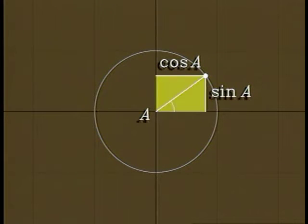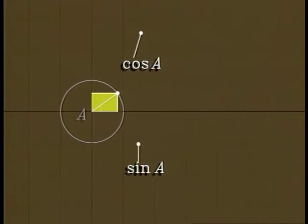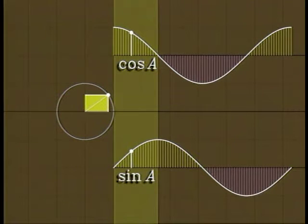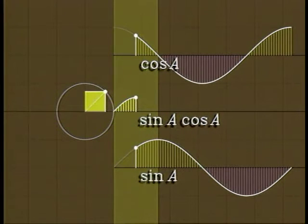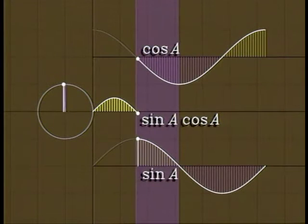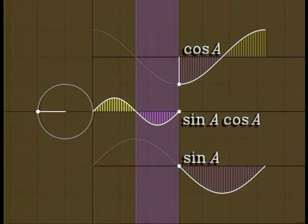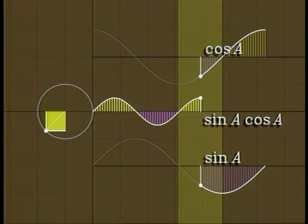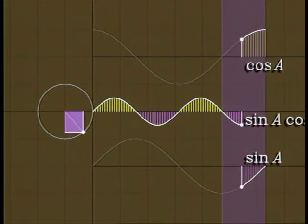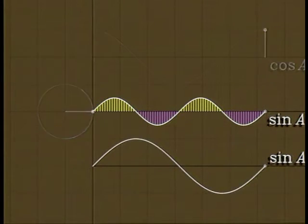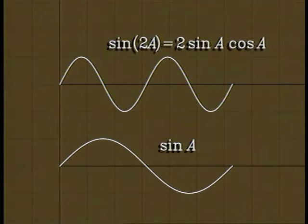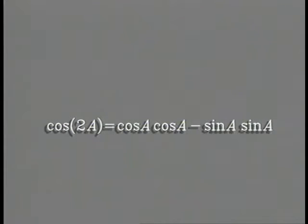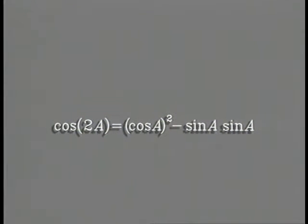Let's see what the double angle formula means graphically. The product of the sine and cosine is the area of this rectangle. From zero to 90 degrees both sine and cosine are positive, so the product is positive — it goes from zero to a maximum, then back to zero. Here the cosine is negative, so the product is negative. Here both factors are negative, so the product is positive. The double angle formula says that if you multiply sine a times cosine a and scale by a factor of two, you get another sine wave with twice the frequency. The cosine of twice an angle is cosine squared a minus sine squared a.